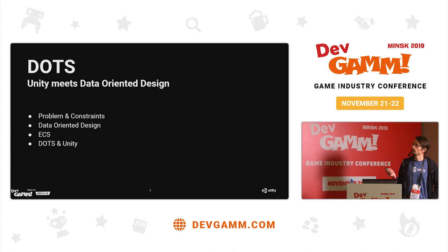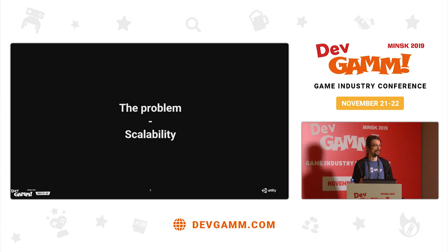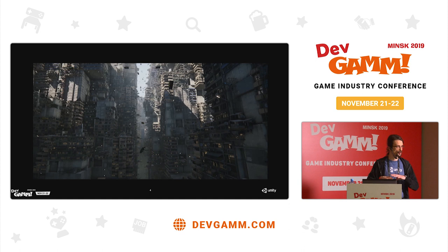Let's get started with the problem. The problem that we are trying to address is scalability. When we say scalability, we usually have in mind that sort of stuff. This is a demo that we released last year at Unite, the Unity conference, and this demo is called Mega City. It was about having a large environment — a very big scene with a lot of things the player can see and lots of space where the player can fly his car. It's some sort of futuristic city.